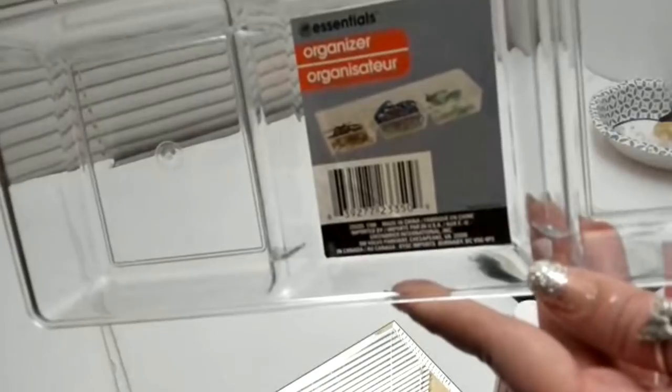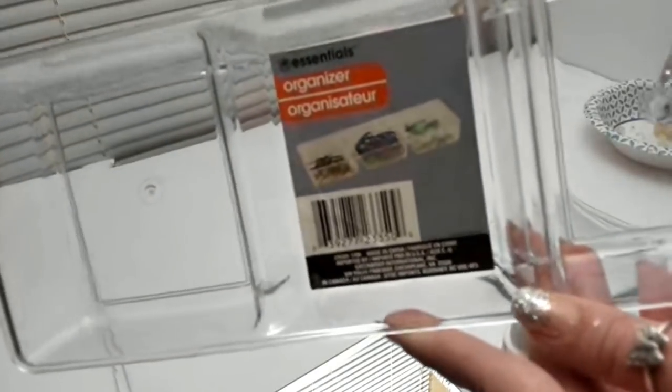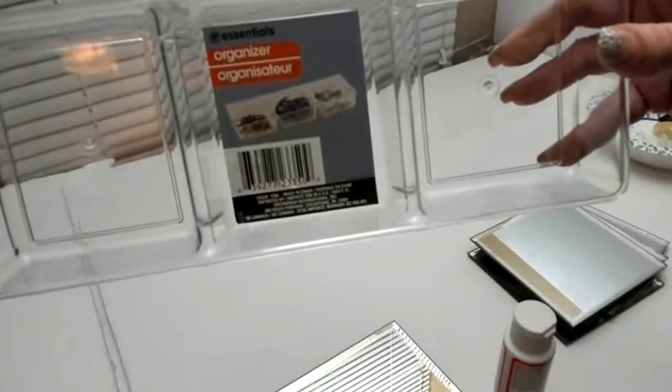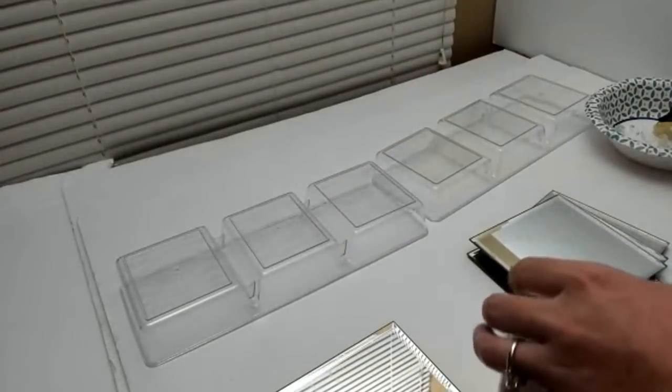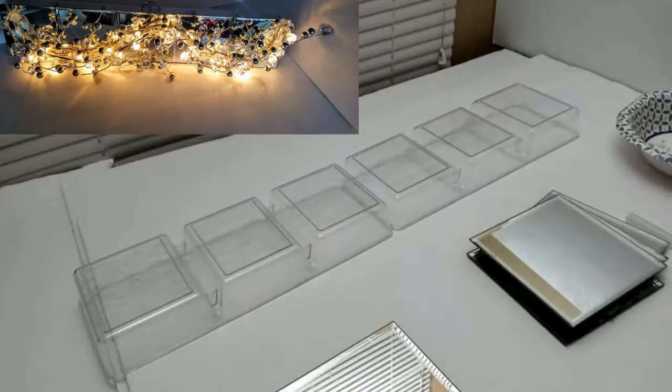For this project I'll be using four of these storage containers and ten of the small square mirrors from Dollar Tree. I actually did this very same thing when I made the vanity light a while back. I laid two of the containers face down next to each other so that I make one long piece.